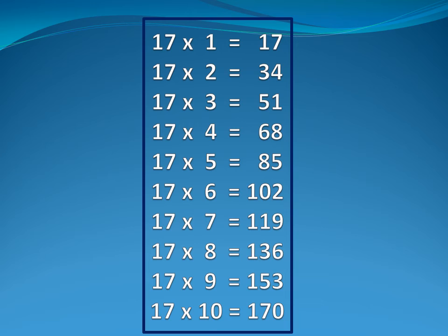Now seventeen table. Seventeen one is seventeen. Seventeen two is thirty-four. Seventeen three is fifty-one. Seventeen four is sixty-eight. Seventeen five is eighty-five.